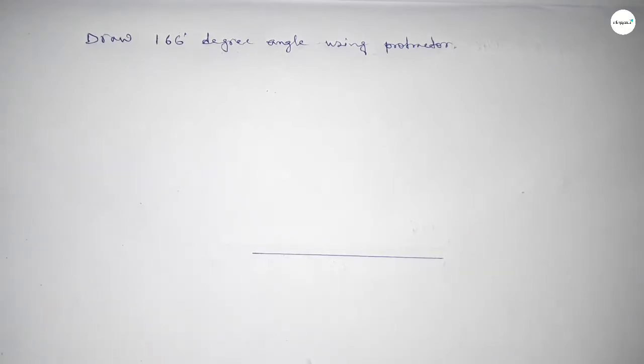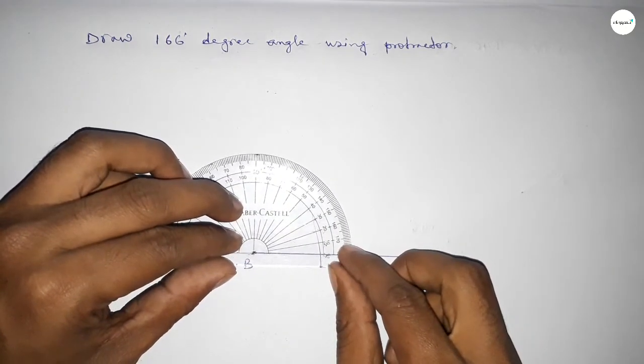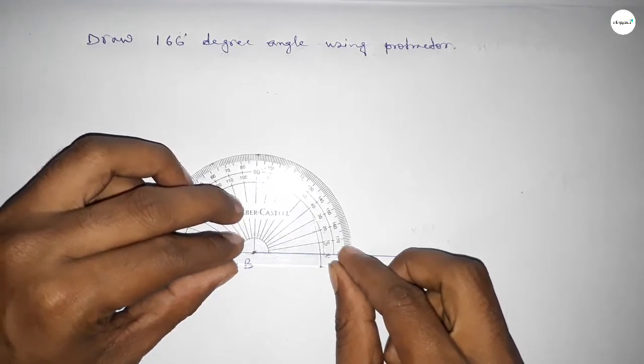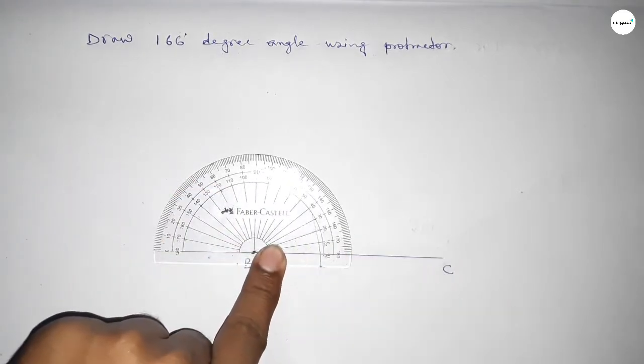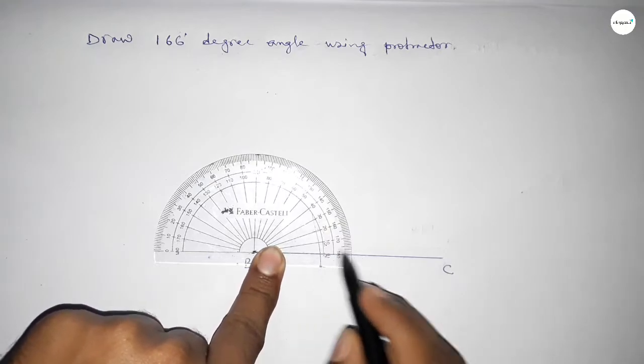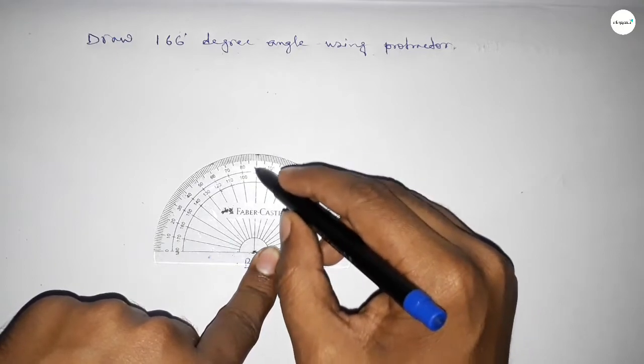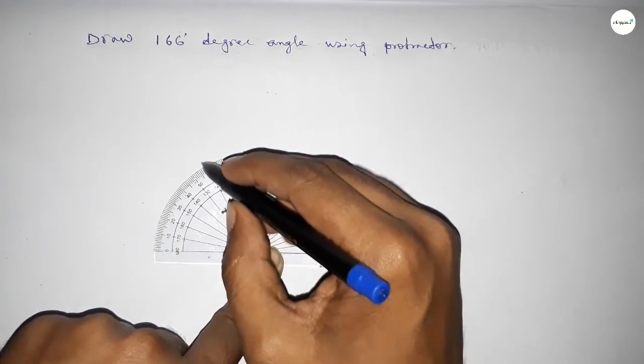Next, taking here point B and here C. Now putting the protractor on the point B perfectly, then counting the angles. So this is starting angle: 0, 10, 20, 30, 40, 50, 60, 70, 80, 90, 100...